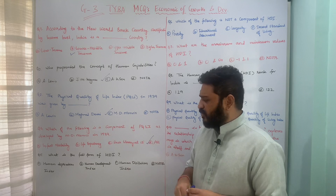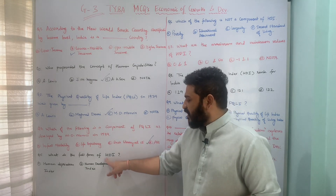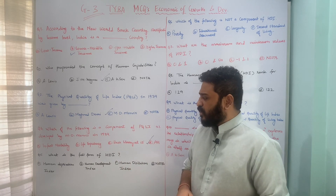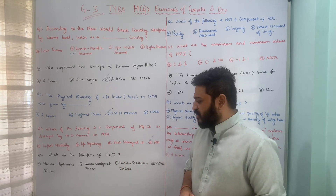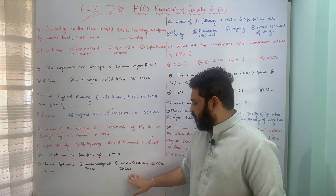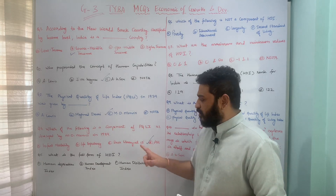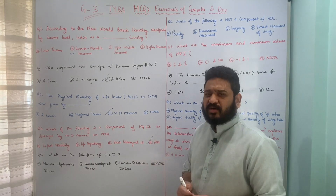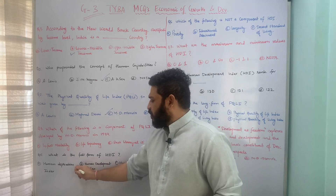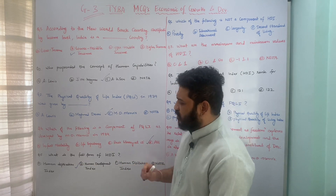The next question asks for the full form of HDI. Options are: human deprivation index, human development index, human disillusion index, or none of the above. This is an easy question — the correct answer is option B, human development index or HDI. I hope this question is clear.